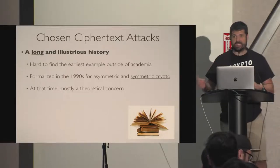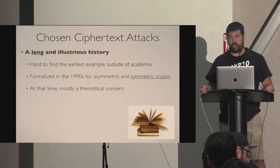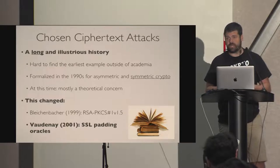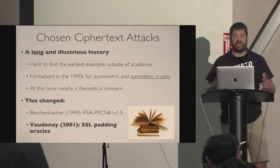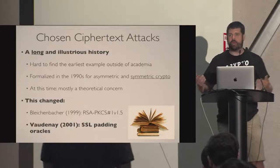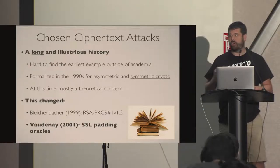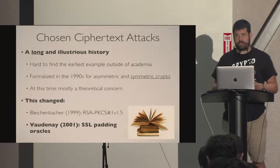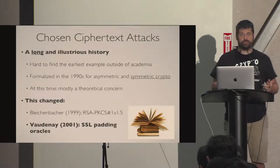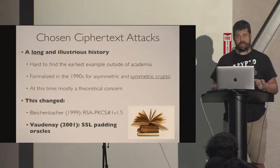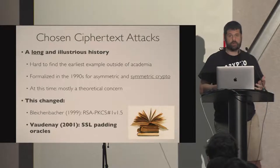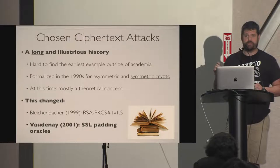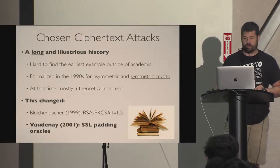At the time — the 80s and 90s — this was really theory. Nobody thought this would actually affect us, until the late 1990s and early 2000s, when two attacks came out of nowhere and made industry and people who do real crypto care about this problem. The first, in the asymmetric crypto world, was the Bleichenbacher attack. In the symmetric crypto world, the first was the Vaudenay attack around 2001 or 2002 — a padding oracle attack. Since this talk is almost entirely about symmetric crypto, I'll focus on that.